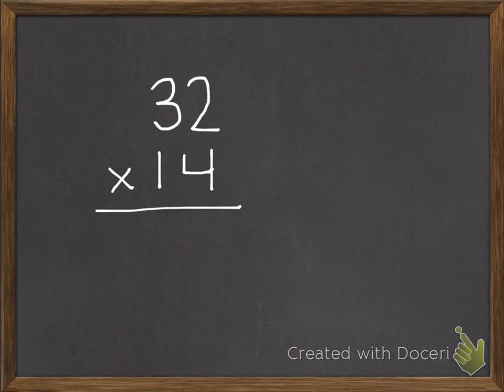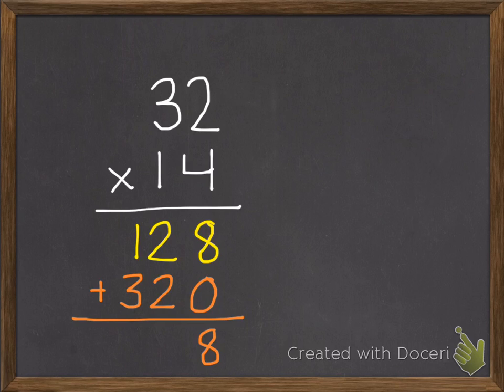Here is your first practice problem: 32 times 14. You need to multiply this. If you'd like to draw a model to help you, you can. Go ahead and pause. We start with our ones: 4 times 2 is 8. 4 times 3 is 12. Move on to our tens, put our 0 there. 1 times 2 is 2. 1 times 3 is 3. Add them together, and we get 448.